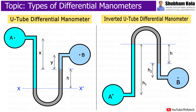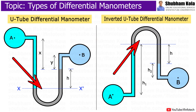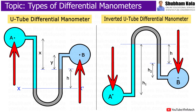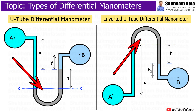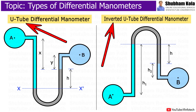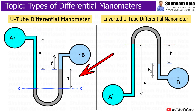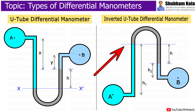In this video, we will discuss differential manometers, which are used to measure pressure difference between two points in the same pipe or in two different pipes. Differential manometers are categorized into two types: one is the U-tube differential manometer and the other is the inverted U-tube differential manometer.